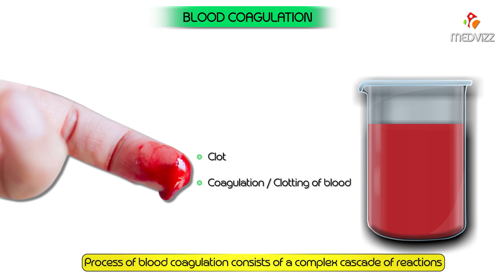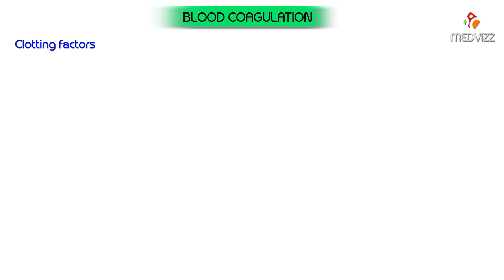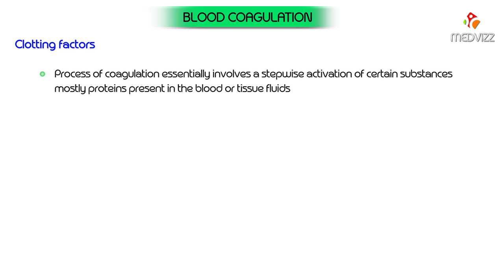The process of blood coagulation consists of a complex cascade of reactions. Before discussing the mechanism of blood coagulation in detail, it will be worthwhile to study the essential features of various clotting factors involved in this process. The process of coagulation essentially involves a stepwise activation of certain substances, mostly proteins, present in the blood or tissue fluids.